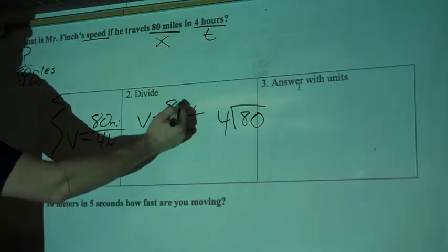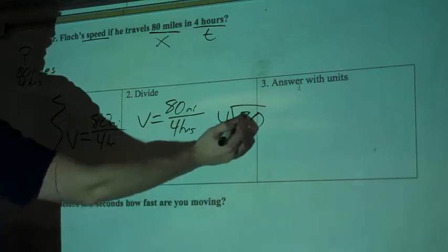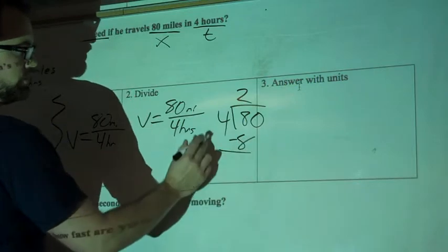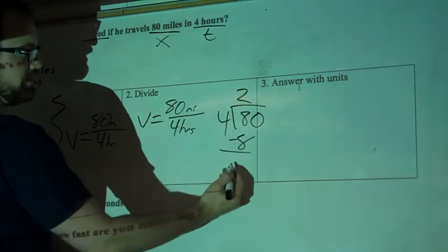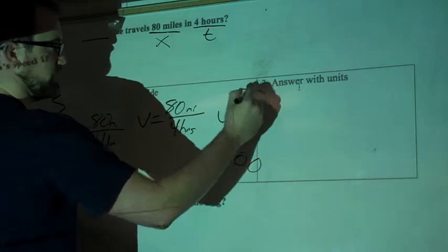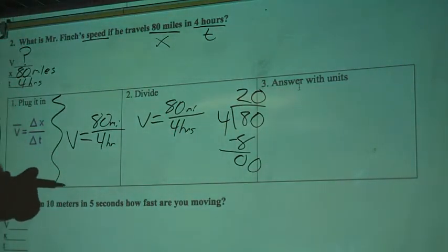You're trying to find how many times 4 fits inside of 80. So 4 goes into 8, 2 times. That gives me 8. 4 times 8 is 2, or 2 times 4 is 8. 8 minus 8 is 0. 0 again. 4 goes into 0, 0 times. My final answer is 20.